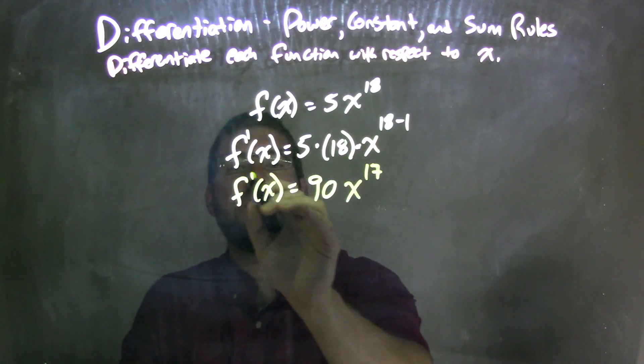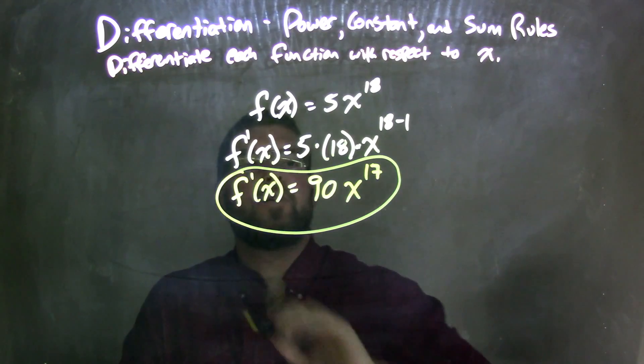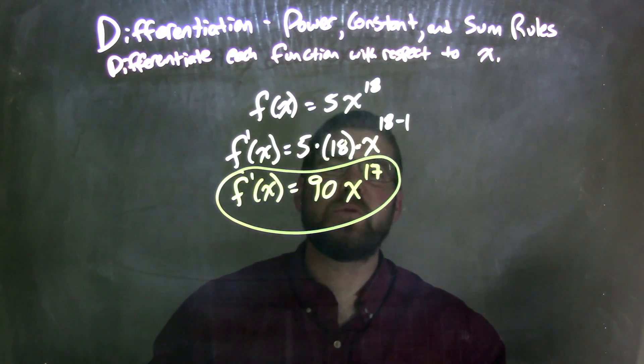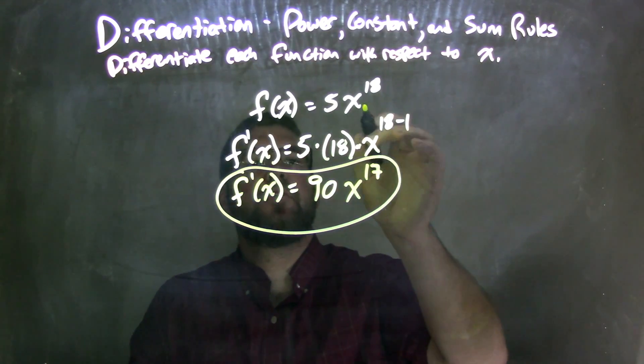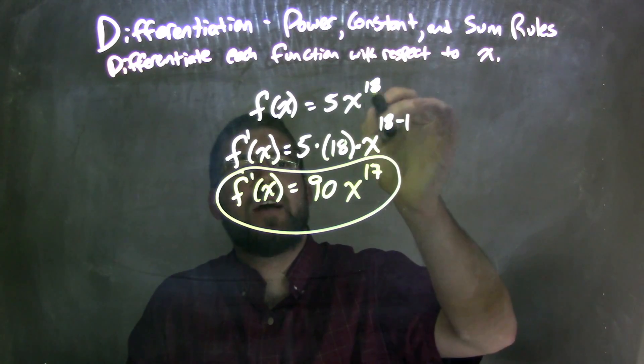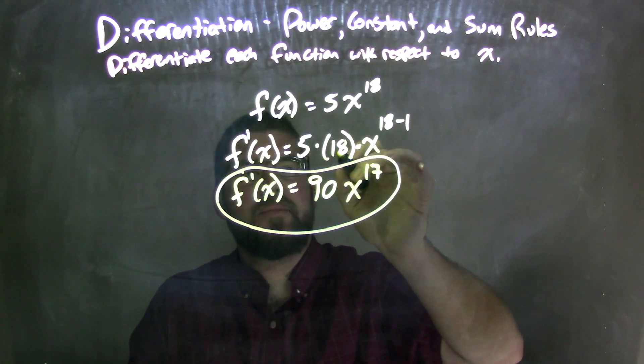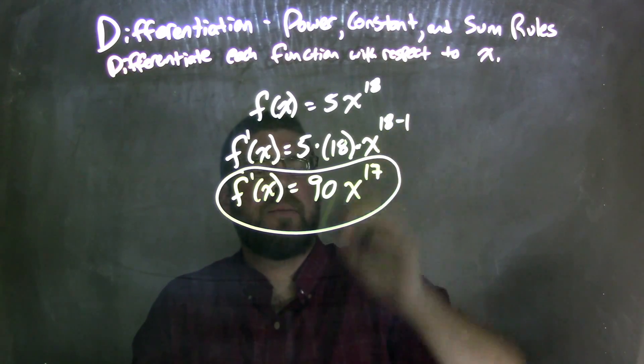So let's recap. We're given f of x is equal to 5x to the 18th power. Now, when I derive that, I'm using the power rule. So when I derive that, I have to bring this exponent down, 18 down here. The power comes down, that's part of the power rule, and then we subtract the power by 1.